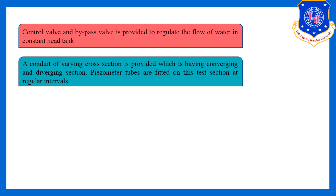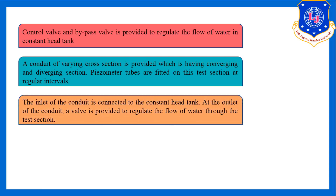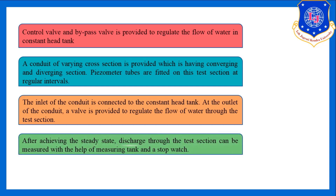Piezometer tubes are fitted on the test section at regular intervals on the upper portion of the setup. The inlet of the conduit is connected to the constant head tank, and at the outlet a valve is provided to regulate the flow. After achieving steady flow, the discharge through the test section can be measured using the measuring tank and a stopwatch.